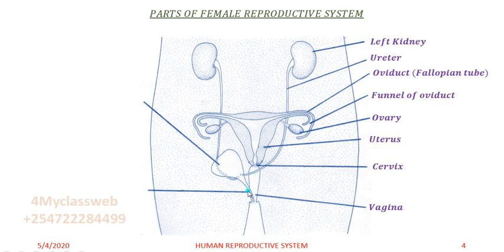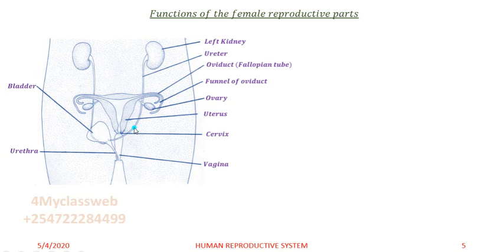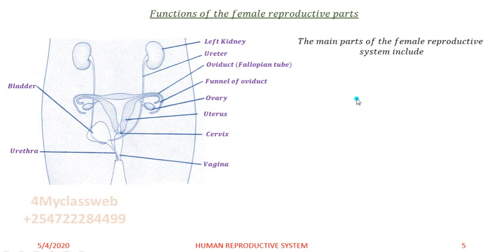From the vagina we also have the bladder, which has a tube called the urethra that allows urine to pass out of the body. These are the various parts of the female reproductive system. I will now narrow the lesson to the main parts of the female reproductive system and their functions.